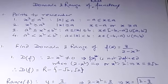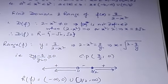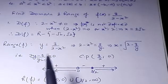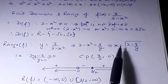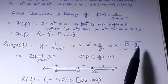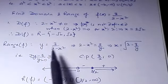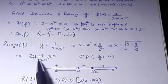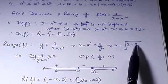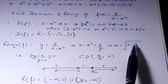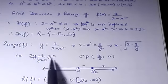Now we will find the range. To find the range, we write the function in terms of x, expressing x in terms of y. We get x = √((2y - 3) / y). Now, since we are talking about real values, the value under the square root must be greater than or equal to zero. So (2y - 3) / y ≥ 0.